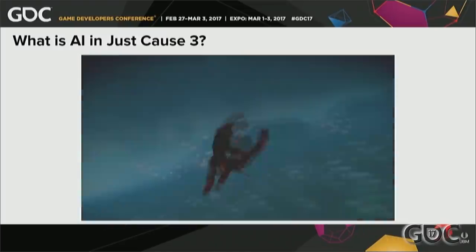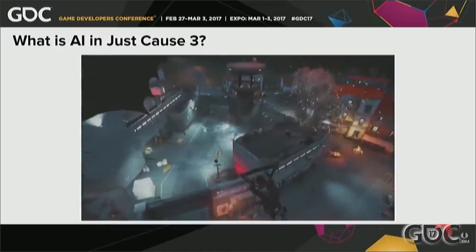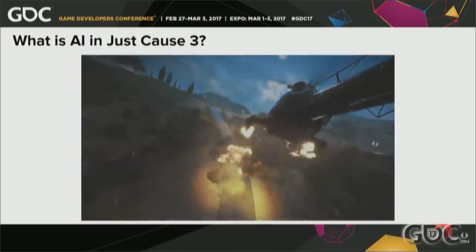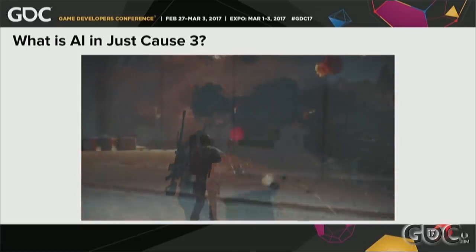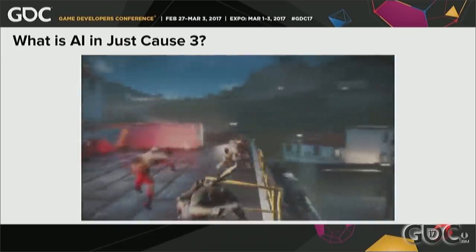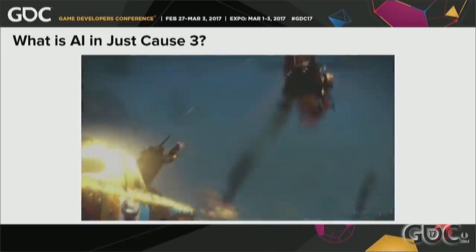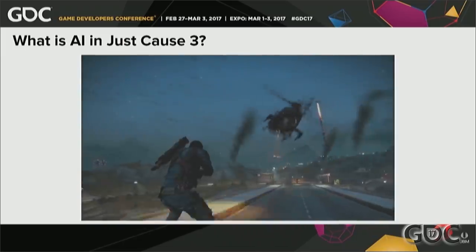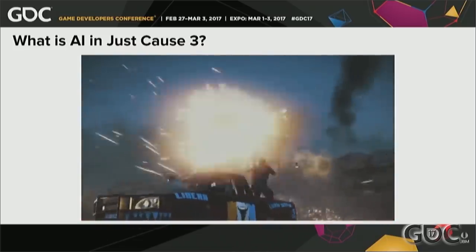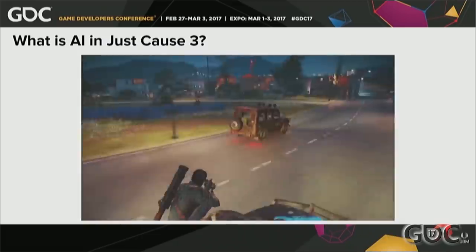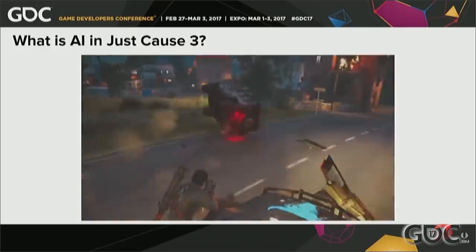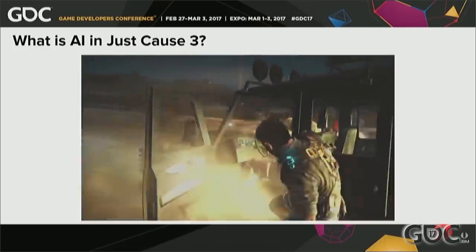So what is AI in Just Cause 3? Just Cause 3 is a chaotic, over-the-top, open-world action game where the player has incredibly powerful traversal and combat mechanics. There are destructible environments, loads of dynamic objects, and tons of ways for the player to mess around with the AI. The player can hijack AI vehicles, shoot AI out of their parachutes, use their grappling hook to tether a character to their jet and fly them halfway across the world. Basically, there are an extremely high amount of unpredictable things that can happen to or near the AI at any given time.